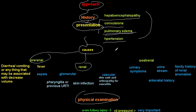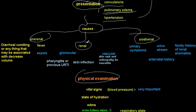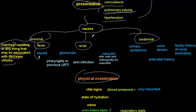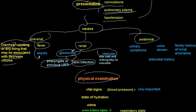Ask about the possible causes of acute kidney injury by category. Pre-renal causes include volume depletion from fever, sepsis causing vasodilation, diarrhea, vomiting, skin losses such as burns, or decreased cardiac output from congestive heart failure. For renal causes, ask about previous pharyngitis or upper respiratory tract infection, as post-streptococcal glomerulonephritis can cause acute kidney injury, or prior skin infections. Ask about any viral infection in the two weeks prior.